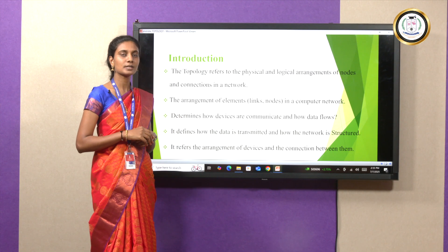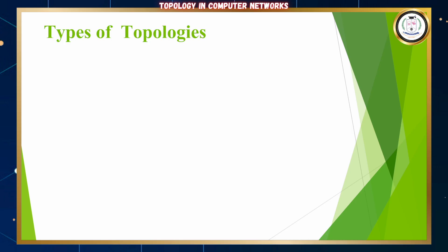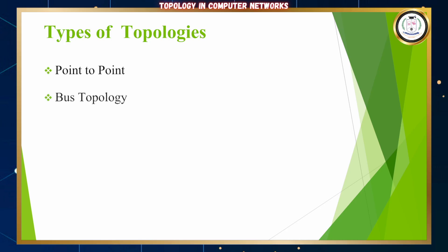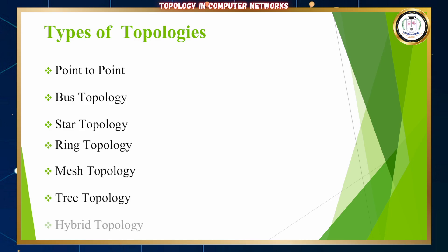In topology, we have seven types. The first one is point-to-point topology, bus topology, star topology, ring topology, mesh topology, tree topology, and the final one is hybrid topology.